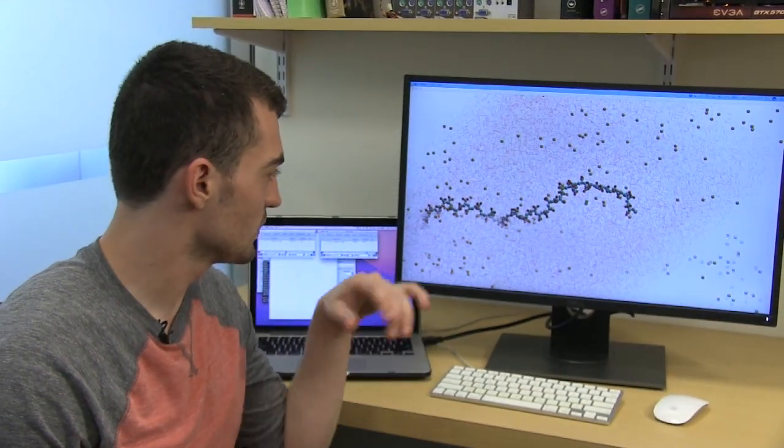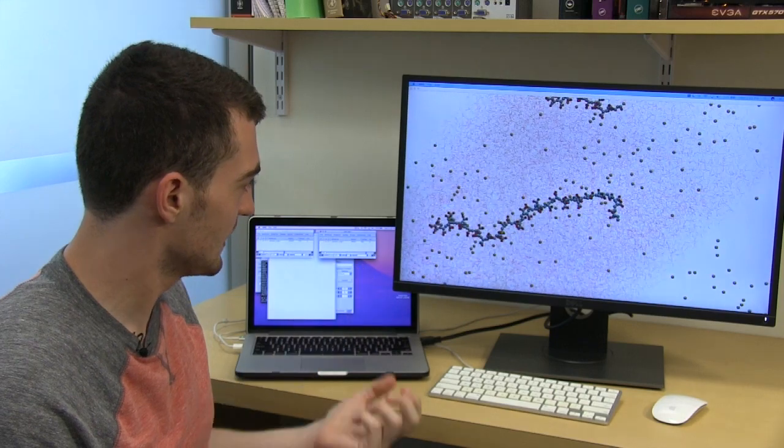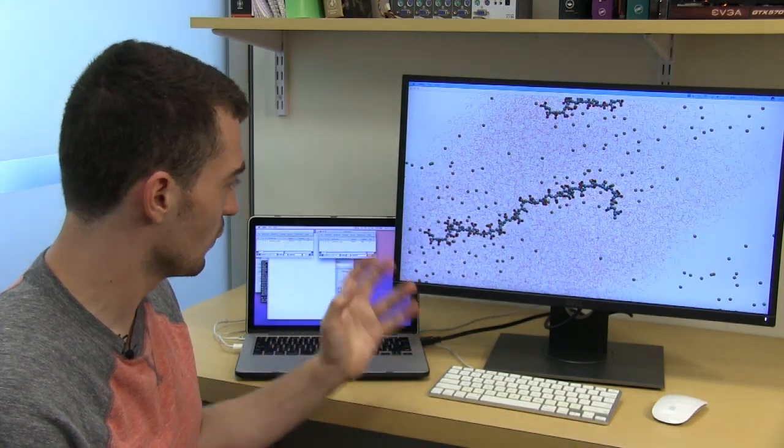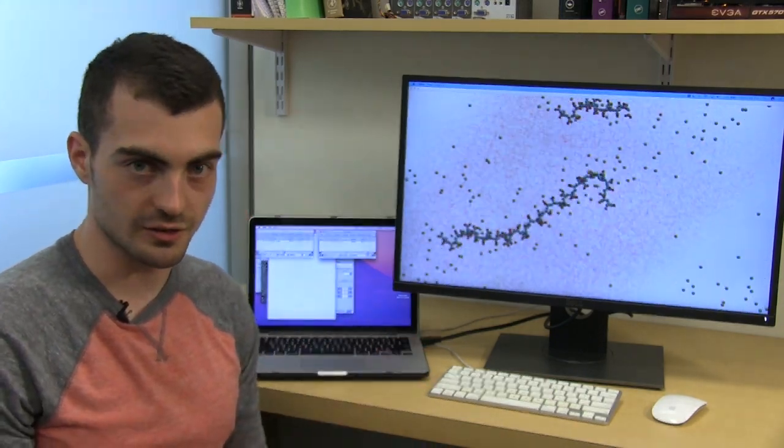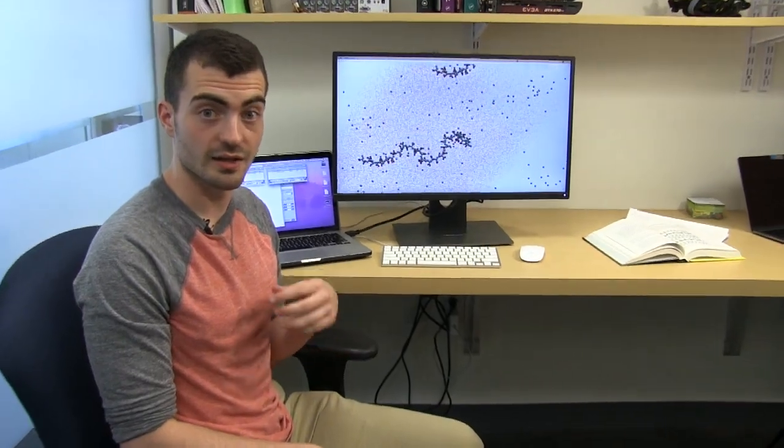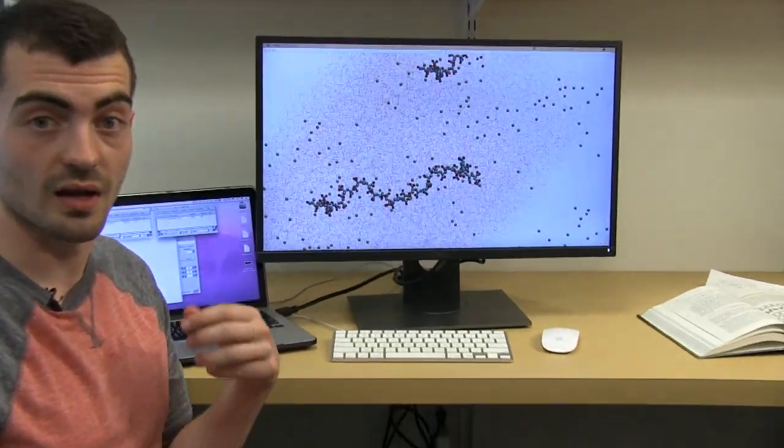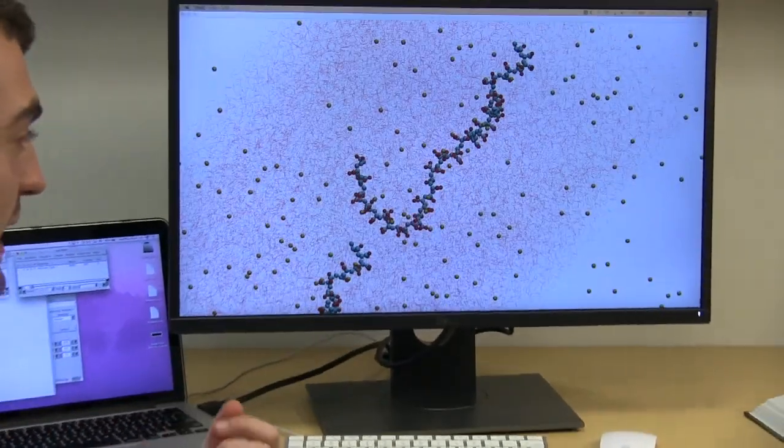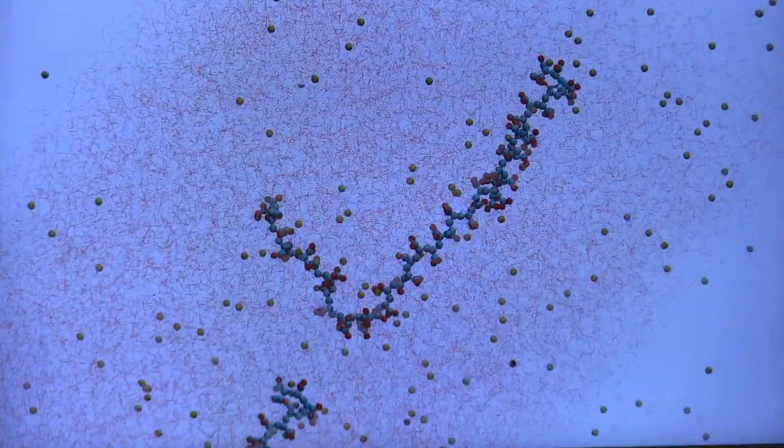So what we're doing here is we have polyacrylic acid, a negatively charged polymer, in a system with water and counter ions to neutralize the charge of the system. Here we're letting the system relax into a steady state, after which we will add additional calcium and carbonate ions where we can then see how the polymer helps clustering of these calcium and carbonate ions into different crystalline structures.